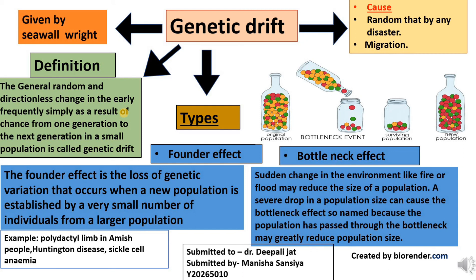Some case studies on the founder effect include: polydactyly among the Amish people; Huntington's disease, which is more common among Dutch-descent populations of South America than in most other populations, because a gene for Huntington's happened to be unusually common among the small population of the original Dutch colonists; and sickle cell anemia. From these examples and case studies, genetic drift is a natural, random, and directionless change in allele frequency simply as a result of chance from one generation to the next in a small population.